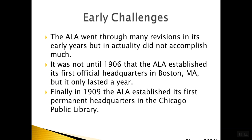It was Dewey himself that developed the ALA's constitution the following year in 1877, and eventually became its fourth president. The ALA went through many revisions in its early years and in actuality did not accomplish much. It was not until 1906 that the ALA established its first official headquarters in Boston, but it only lasted a year. Three years later, in 1909, the ALA established its first permanent headquarters in Chicago at the Chicago Public Library.